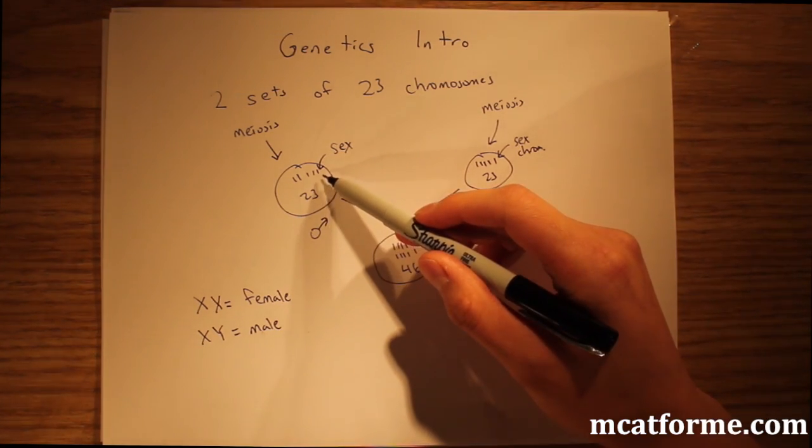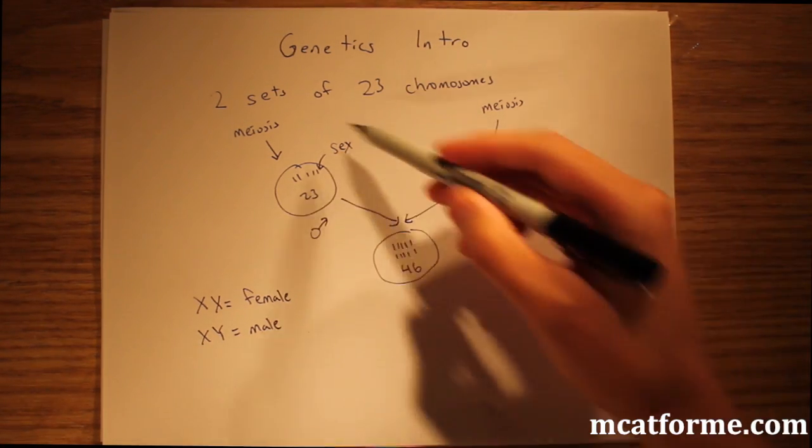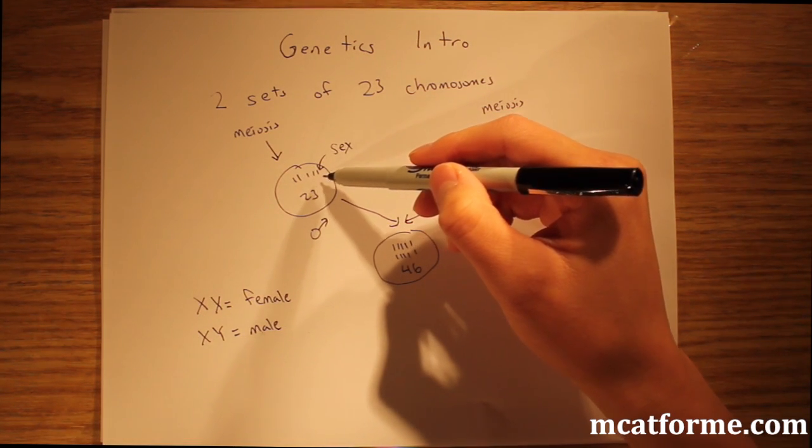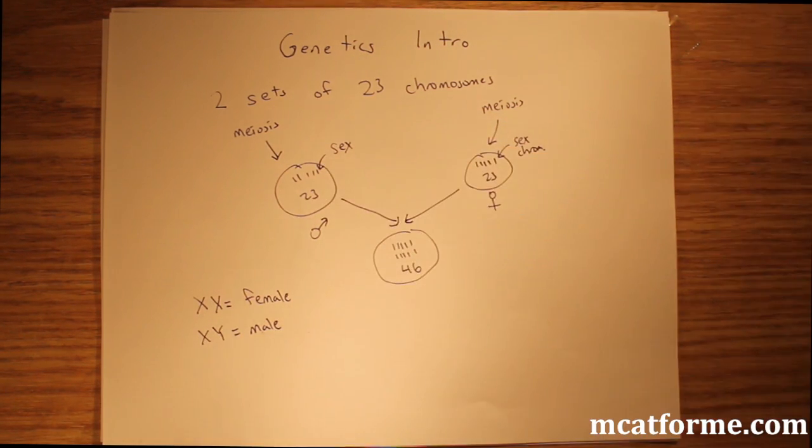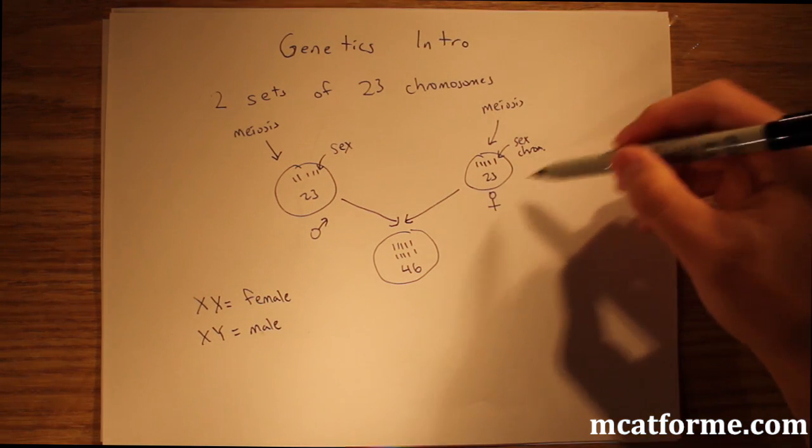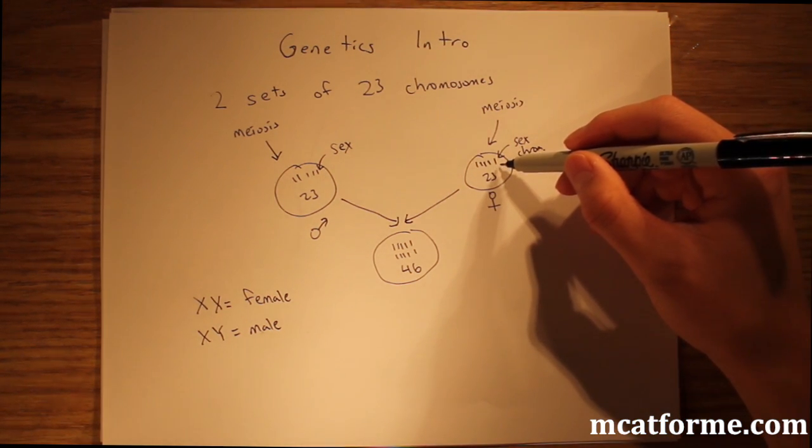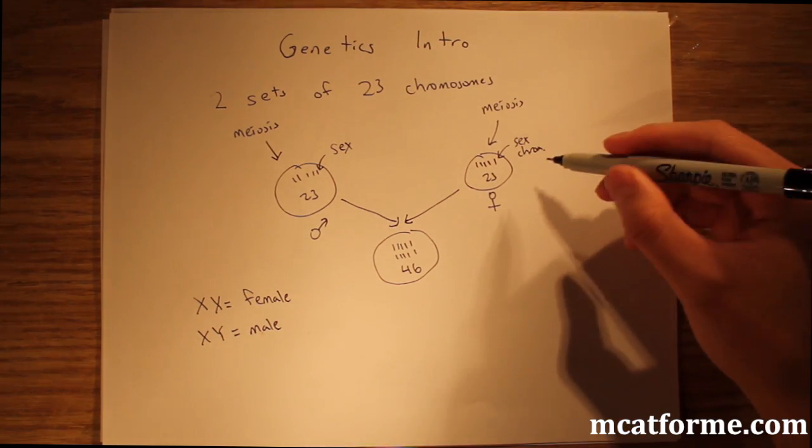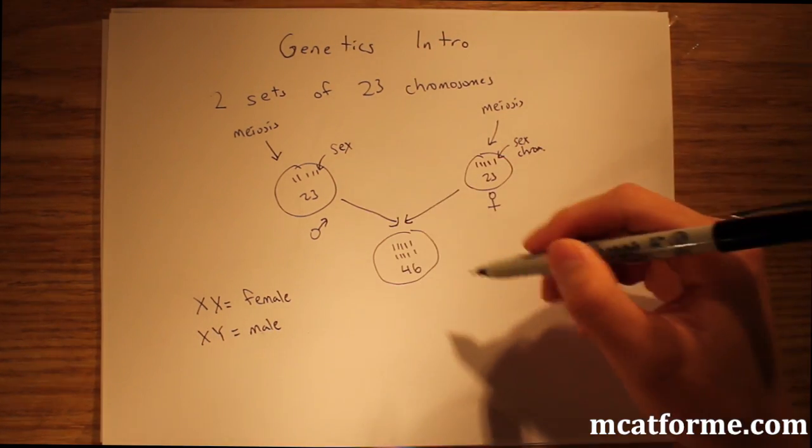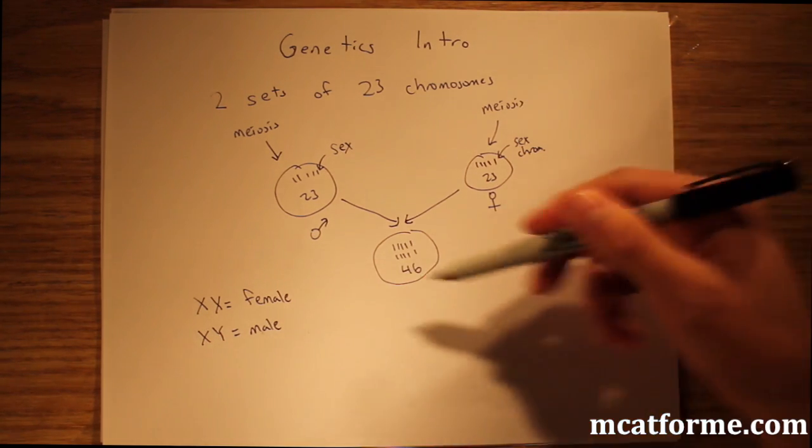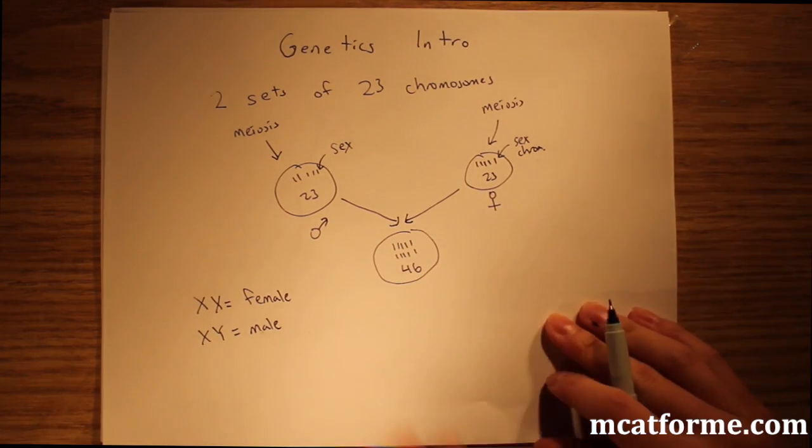What happens is that each individual, the mom will have XX, so one of her X chromosomes will get separated and go into this daughter cell. Same thing with the father, they'll have XY, so this sex chromosome could be either an X or a Y. Whenever these two come together, if it's XX we'll have a daughter, if it's XY we'll have a son.